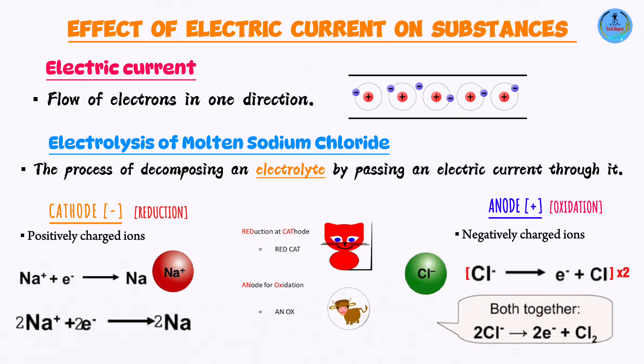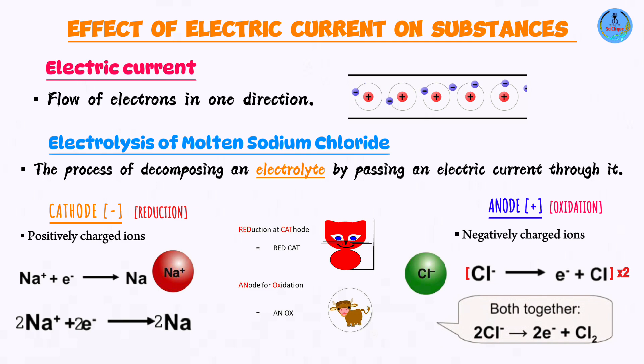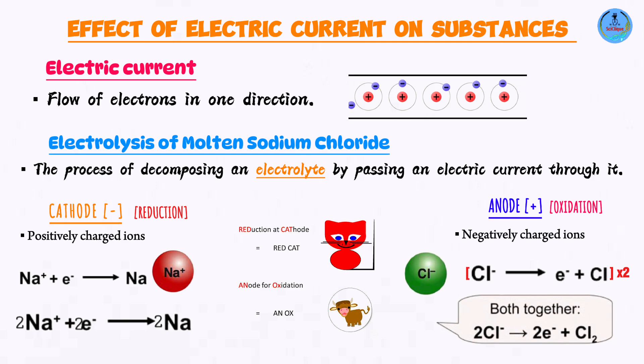I have an easy way for you to remember this. Look at this: RedCat and OxAn. Reduction is always at the cathode. Oxidation is always at the anode.